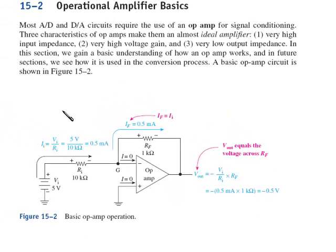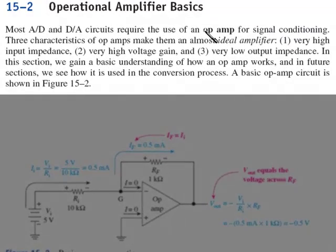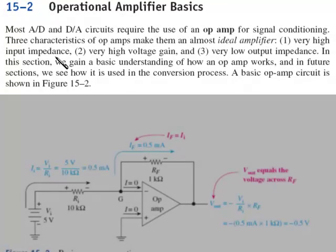Now the basic building blocks of A to D and D to A circuits require the use of an operational amplifier for signal conditioning. There are three characteristics of op-amps that make them almost ideal. The first characteristic is that it has a very high input impedance. In other words, the input into the negative, the inverting input terminal, and the impedance looking in at the positive terminal is almost infinite, very high. It also has a very high voltage gain. So in other words, the difference between these two voltages is amplified into a much larger signal at the output. Very high voltage gain. It's also got a very low output impedance. So if you're at the output and you look back into the op-amp, the impedance that's right near the output terminal is very low.